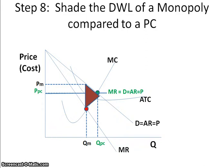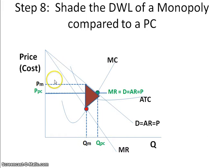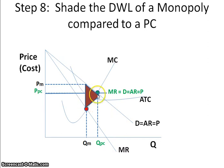To summarize: when comparing a monopoly to a perfectly competitive firm, the perfectly competitive firm will always charge a lower price and always produce more. Consumer surplus is larger for the perfectly competitive firm than for the monopoly. A perfectly competitive firm does not have deadweight loss, whereas the monopoly has deadweight loss because it is not producing at the allocatively efficient amount, resulting in a loss of consumer and producer surplus.